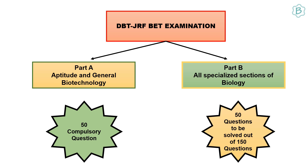If you want to crack this exam and qualify under Category 1 or Category 2, you must concentrate on Part A, which is as important as Part B. Students selected under Category 1 are eligible for admission into PhD programs at any recognized university, while students selected under Category 2 are eligible to join any project sponsored by the government.